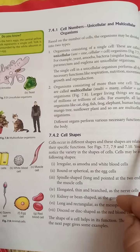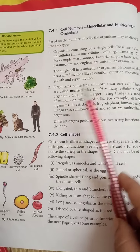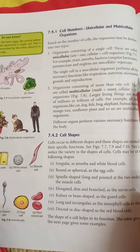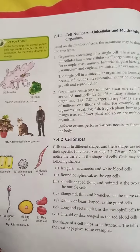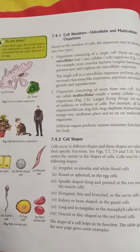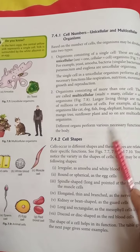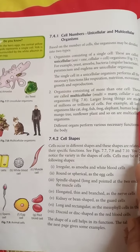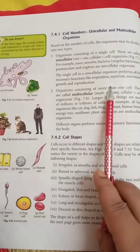Why are they unicellular? Because they consist of a single cell. Single-celled unicellular organisms perform all the necessary functions — such as respiration, nutrition, movement, growth, and reproduction.